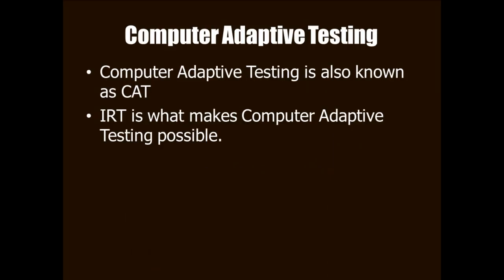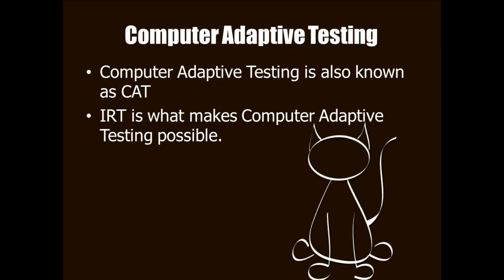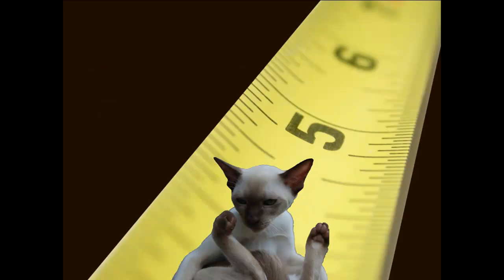The third application of item response theory that I want to talk about is computer adaptive testing. Computer adaptive testing goes by its initials, so it's called CAT. You could say that item response theory is the math behind the CAT, and it's also what gives me an excuse to use this great graphic.